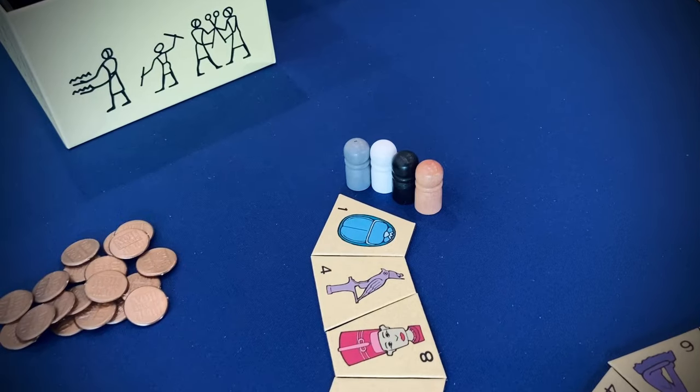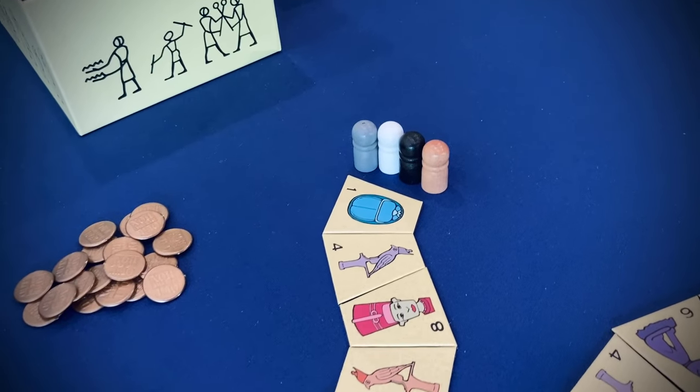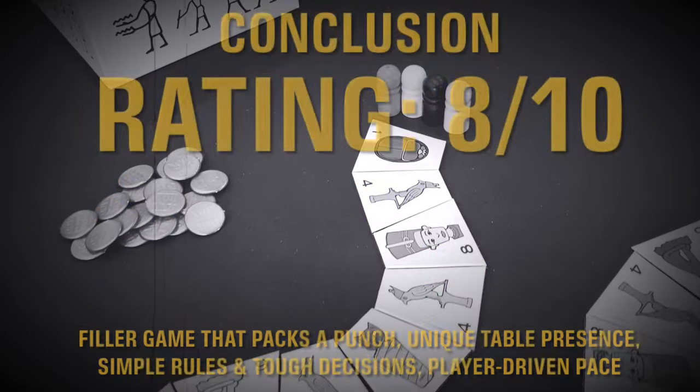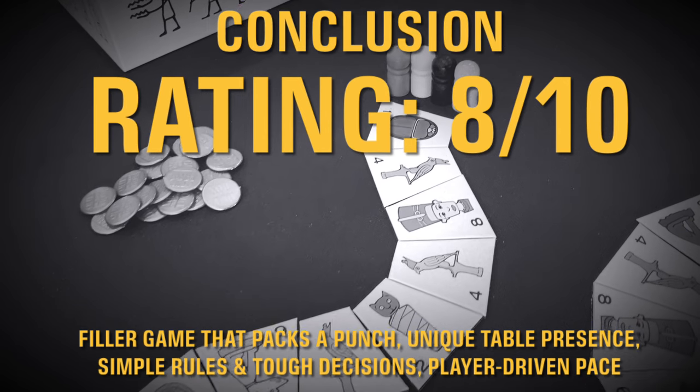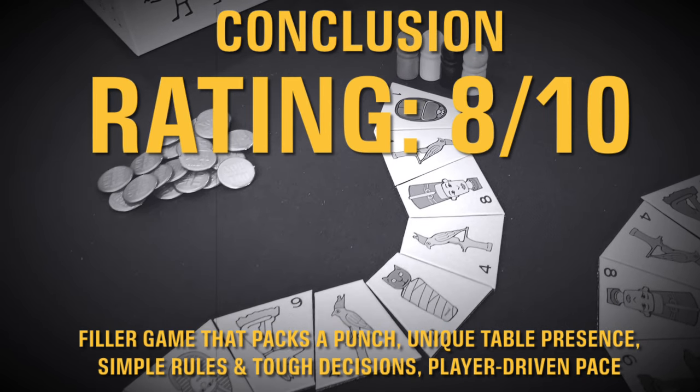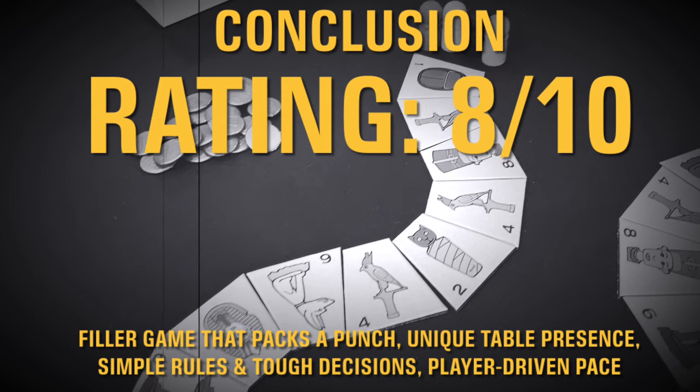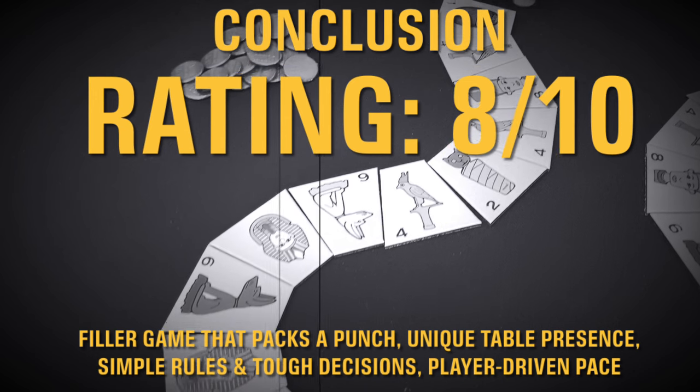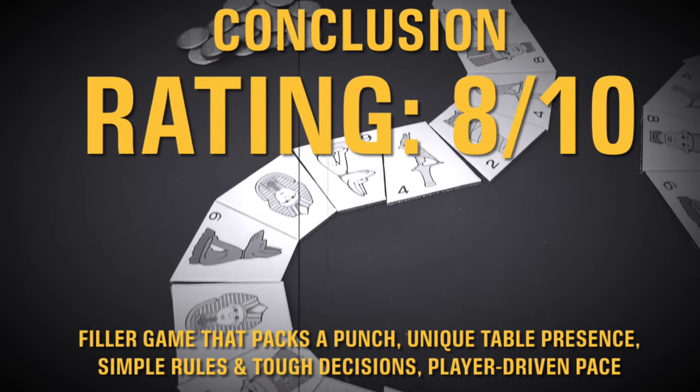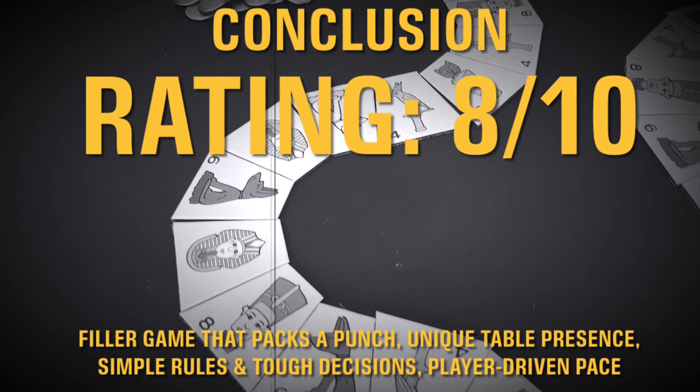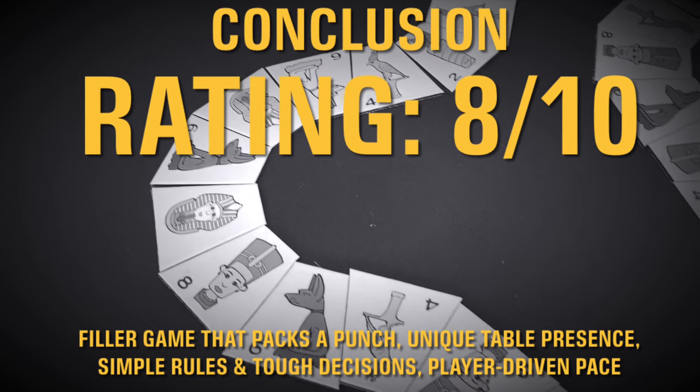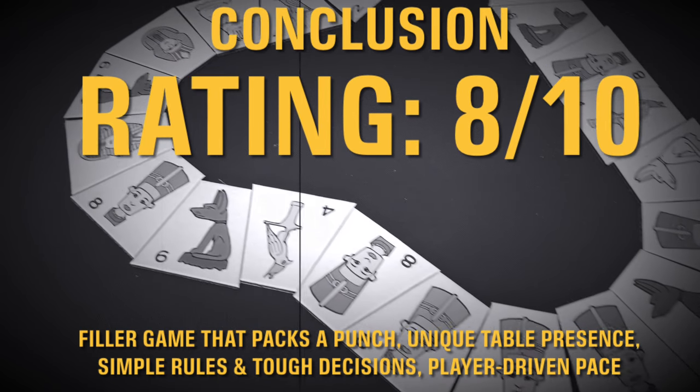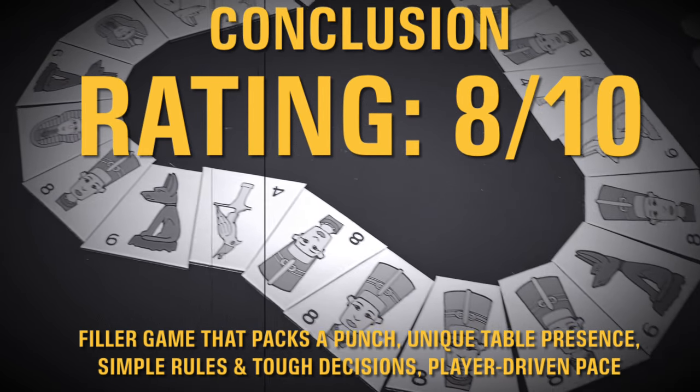Now before I show you the new edition and why I like this edition better, I want to give you my rating on the 2004 version of Tutankhamen. This is an 8 out of 10. That's a very solid rating for a filler game. This is only a 20 to 30 minute game, but it offers you some incredibly awesome decisions from beginning to end. And it's very interactive. You really have to watch the other players kind of get in each other's way, challenge each other, and keep each other in check. And I think this game does it really well for how light and fast it plays.